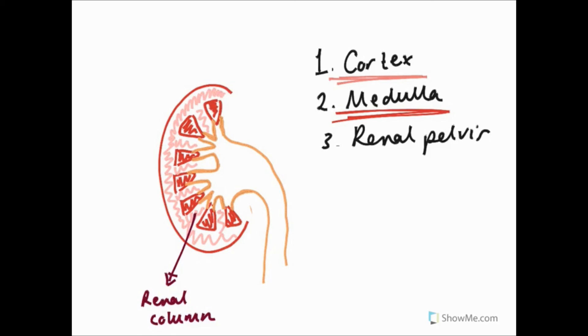The apex of each pyramid is also known as a renal papilla. At the tip of each renal papillae are the small openings of the collecting ducts which collect urine.